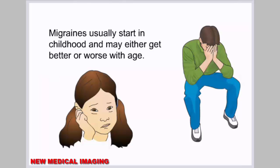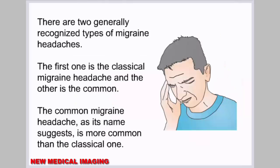Migraines usually start in childhood and may either get better or worse with age. There are two generally recognized types of migraine headaches: the classical migraine headache and the common migraine headache. As its name suggests, the common migraine is more common than the classical one.